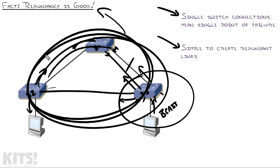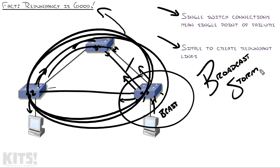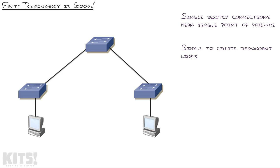It's known as a broadcast storm, and I've gone through a number of them in my career and they've never been good. It is a business-down situation that, if you can't find that loop quickly, typically ends up with everybody being sent home and the company closing for the day. So Spanning Tree Protocol steps onto the scene to allow you to have your cake and eat it too — allows you to have redundancy but stop the broadcast storms.